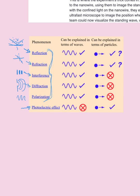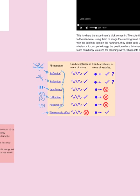The photoelectric effect shook the expectations of what we thought about light. When they shone different types of radiation on the charged metal, they noticed that yellow light produced no change — the gold leaf remained repelled, meaning electrons were still on the metal. UV light, however, emitted electrons from the metal surface. As electrons left the metal, the negative charge decreased and the gold leaf fell back.